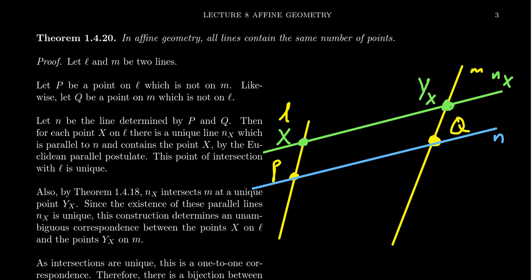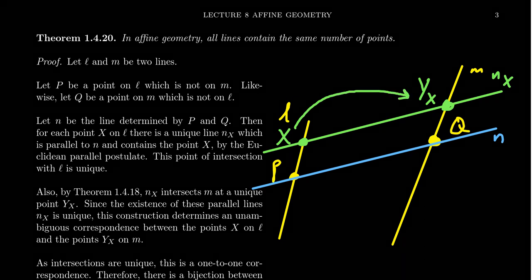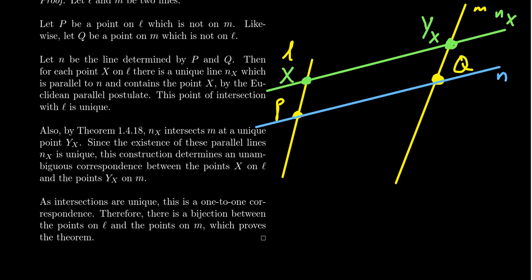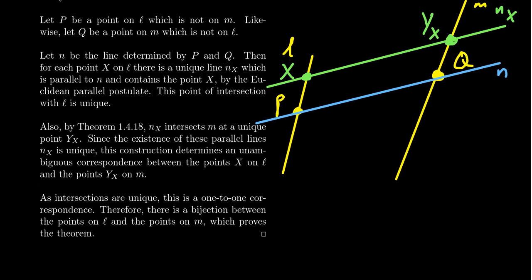Notice we gave it the subscript y_X because we are connecting a point X on L to this point y_X on M — so there's an identification going on. This is in fact a function relationship. We've established a function from the points on L to the points on M, following the rule that X maps to y_X by this construction.